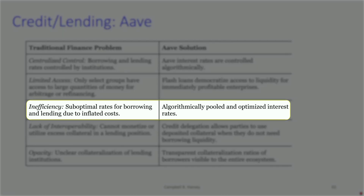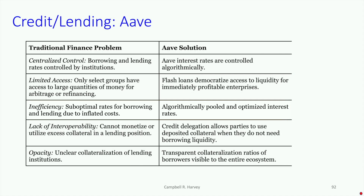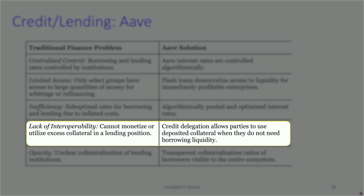For inefficiency, similar to Maker or Compound, Aave is algorithmically pooling assets and optimizing interest rates, meaning suppliers get a reasonable rate of return and borrowers pay a reasonable borrowing rate — much different than centralized finance. For interoperability, I showed an example where we seamlessly went from Compound to Aave within one transaction using a flash loan. These protocols are fully interoperable.